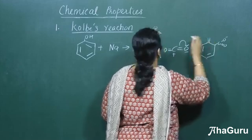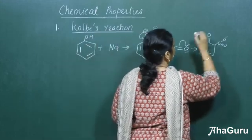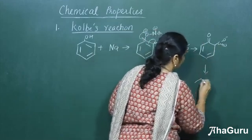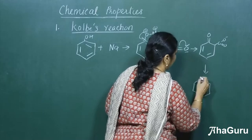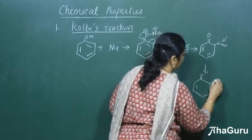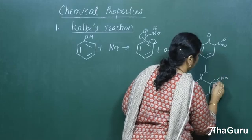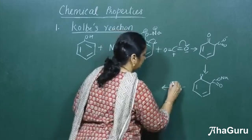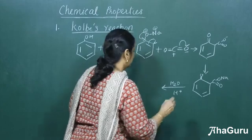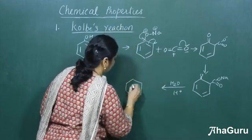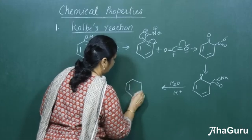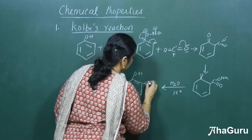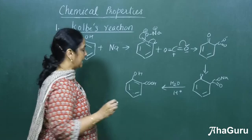We get a compound C–O minus double bond O. This double bond forms because the electron has moved. The Na⁺ from sodium phenoxide combines with this intermediate to give a compound with a double bond O and C–ONa group, which on further hydrolysis using H⁺ gives an OH group and a –COOH group.